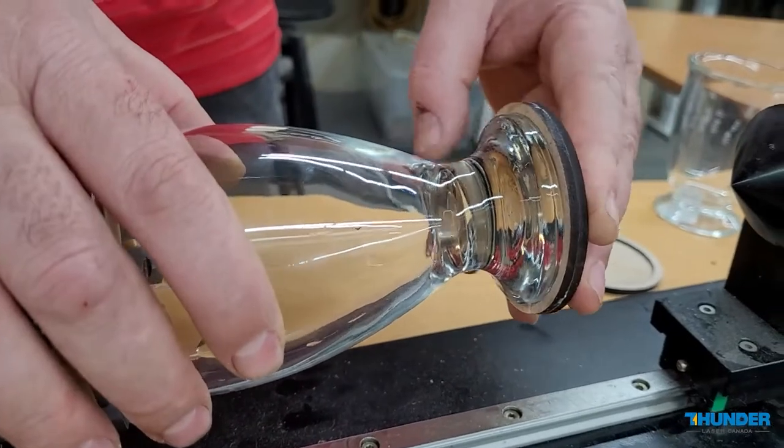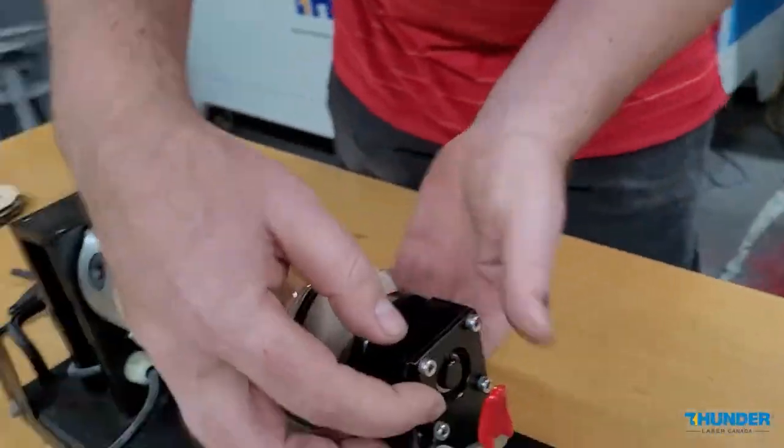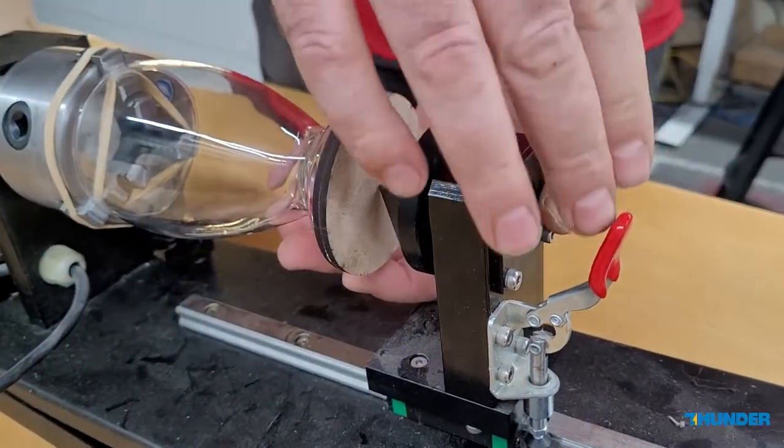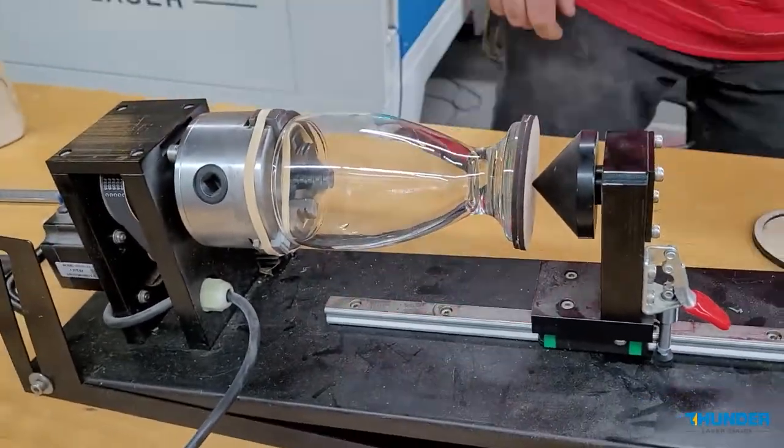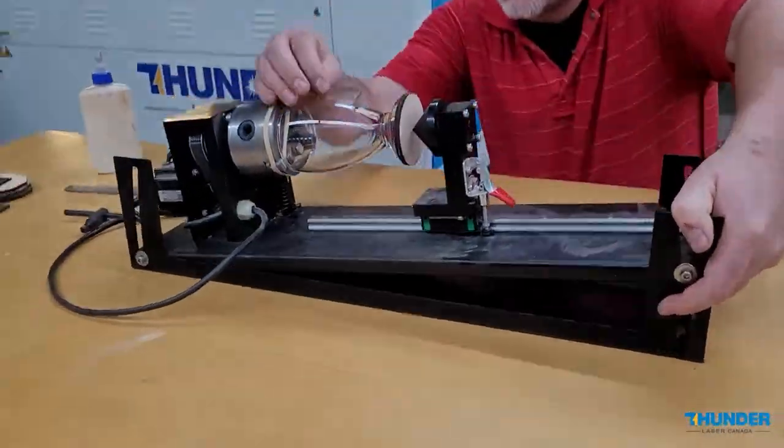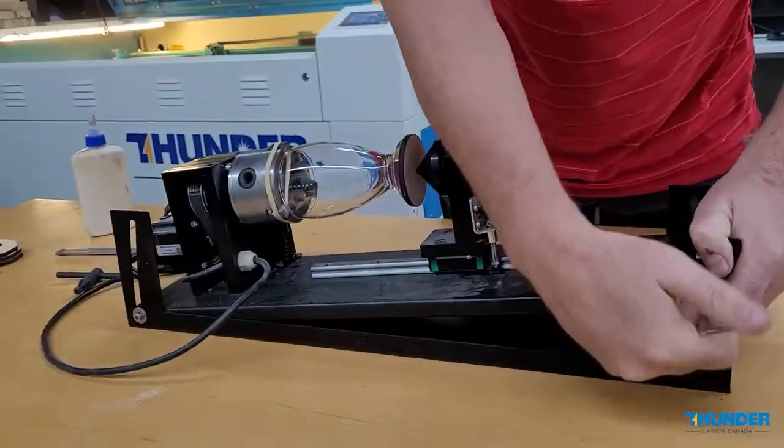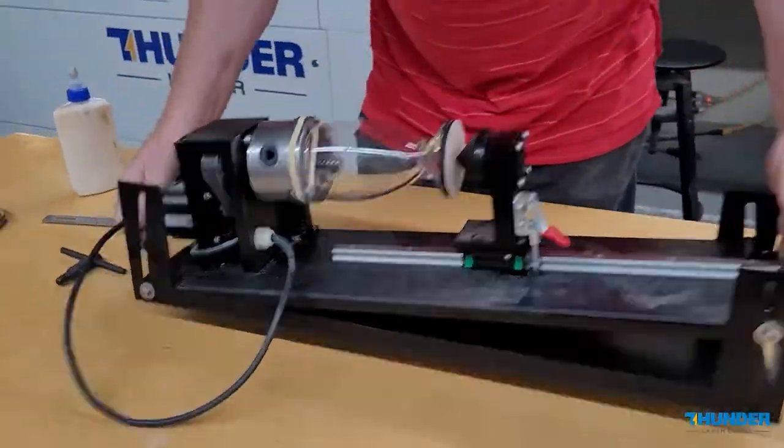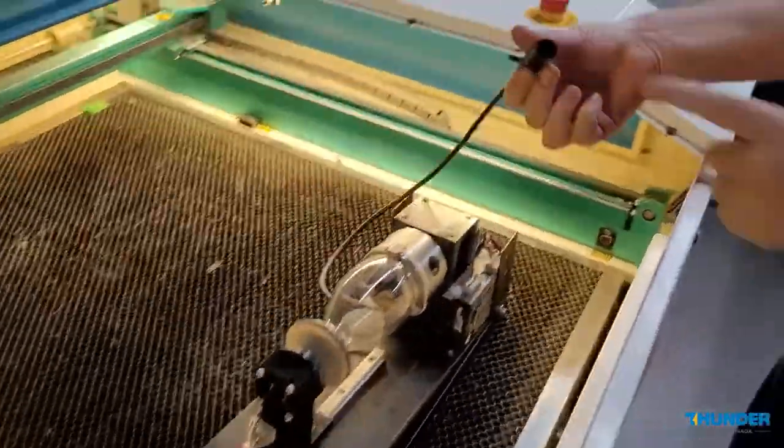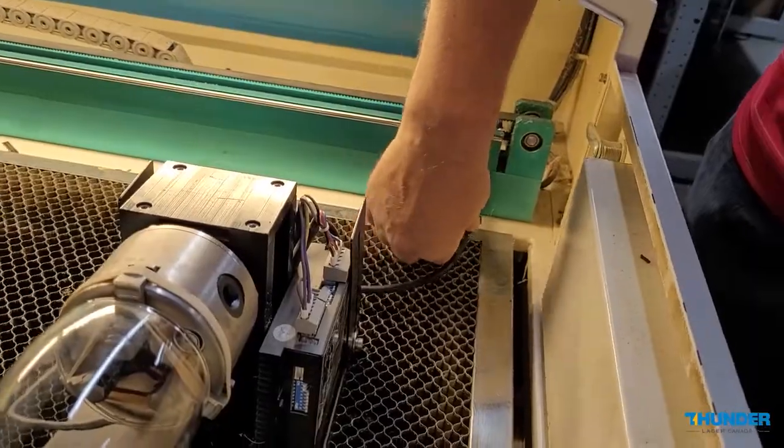So when we place the glass, we place the hole into the end of this. Now I will adjust the height. We'll move it up so that this is approximately straight where I want to engrave on. I want that area to be about straight height, so we'll take this and set that in the laser bed and plug this into the rotary plug here.